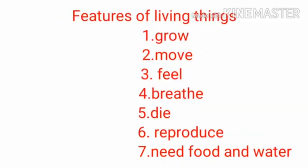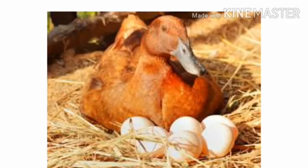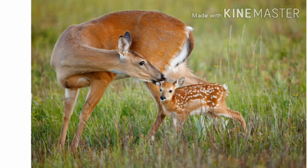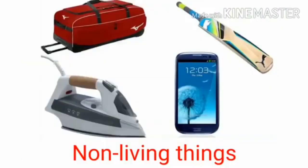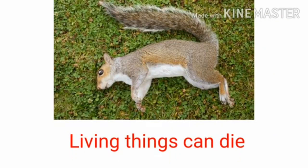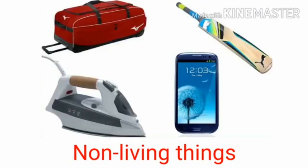Now let's revise the features of living things. Living things can reproduce — some animals reproduce by laying eggs, some by giving birth directly, and plants reproduce through seeds. But non-living things do not reproduce. Living things can die, but non-living things do not die.